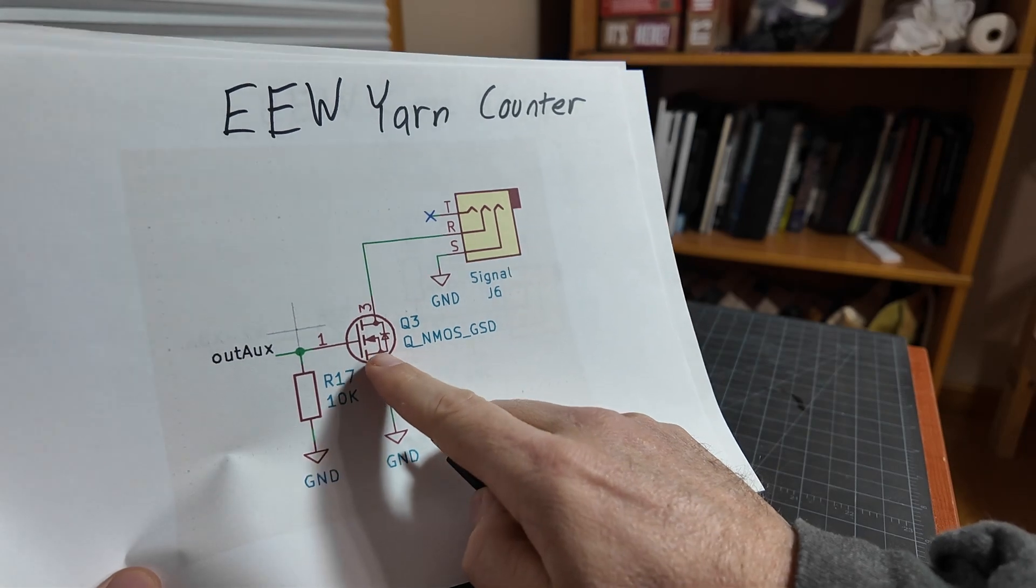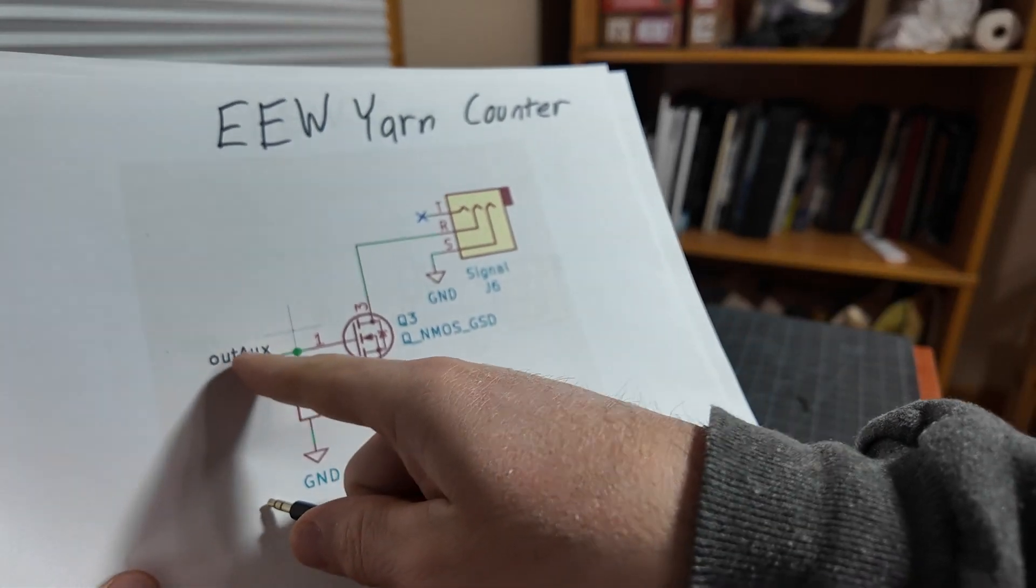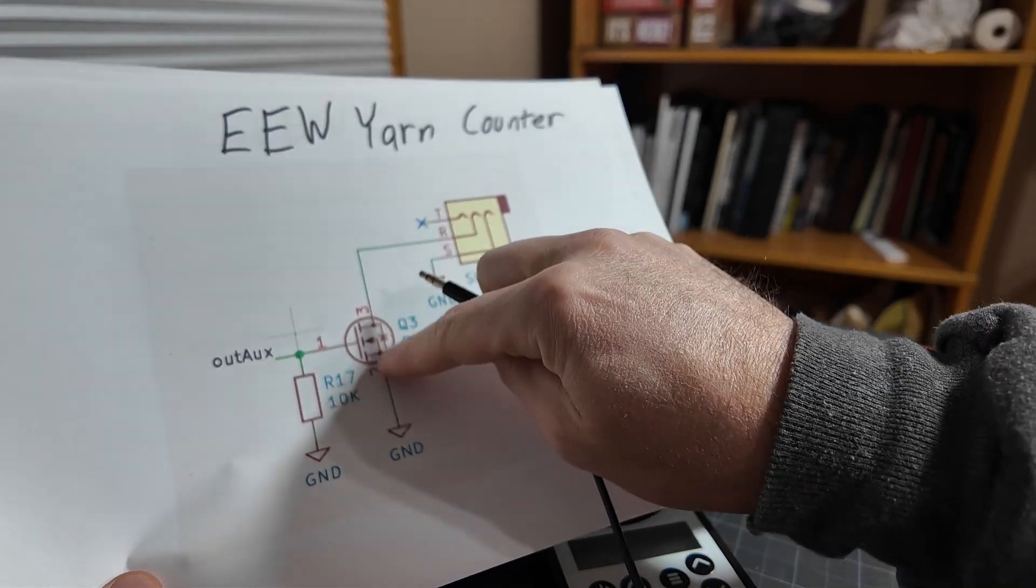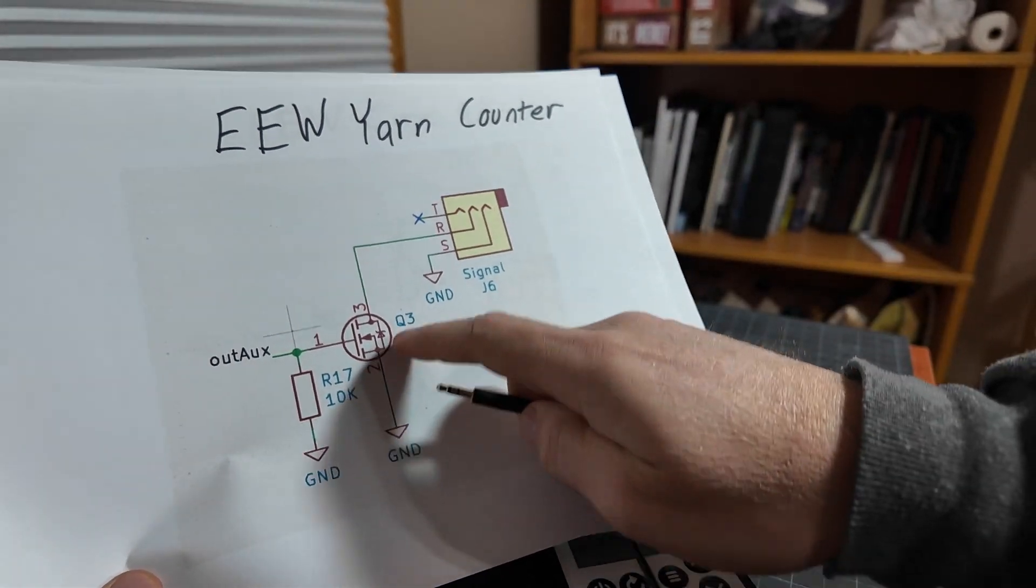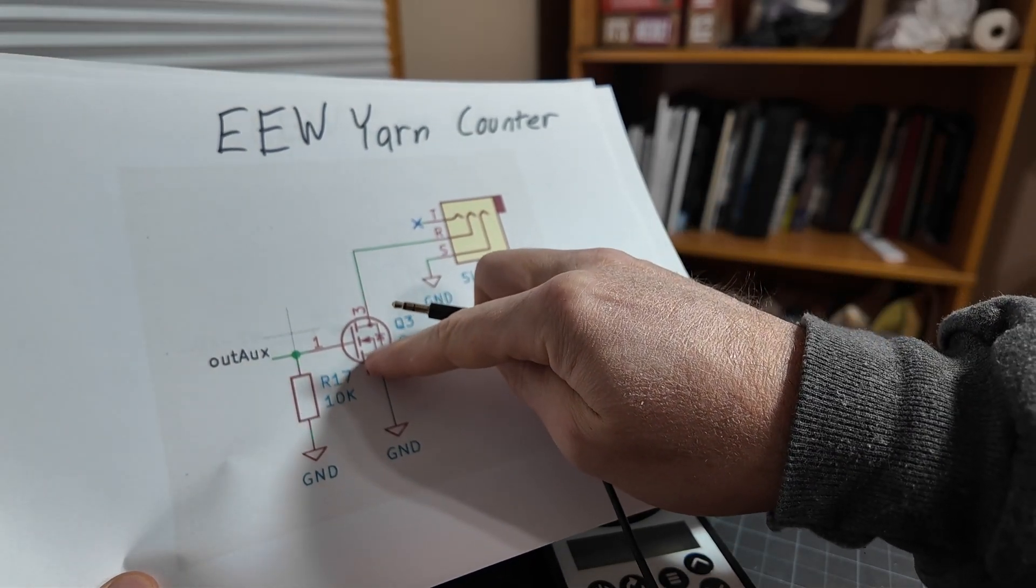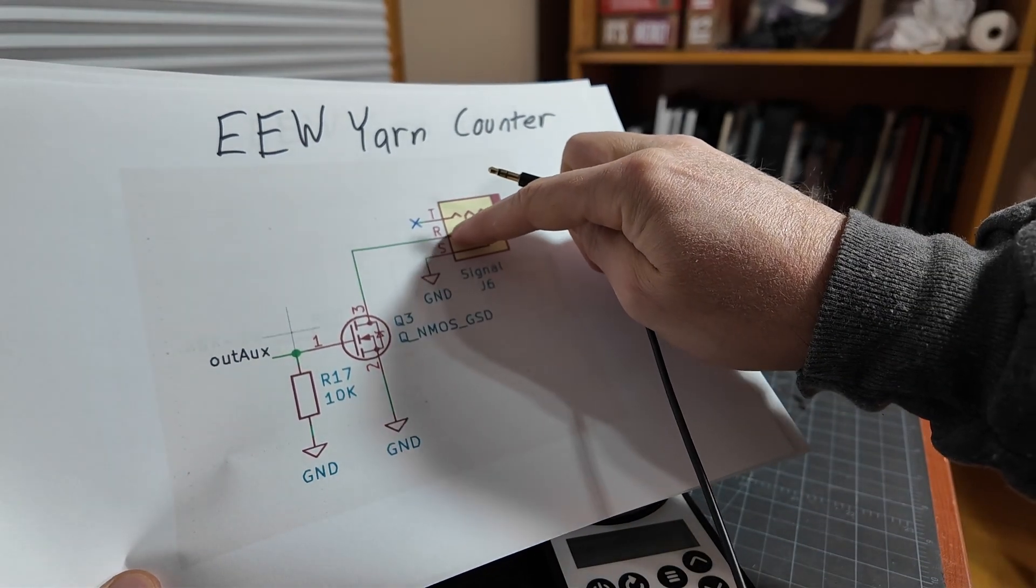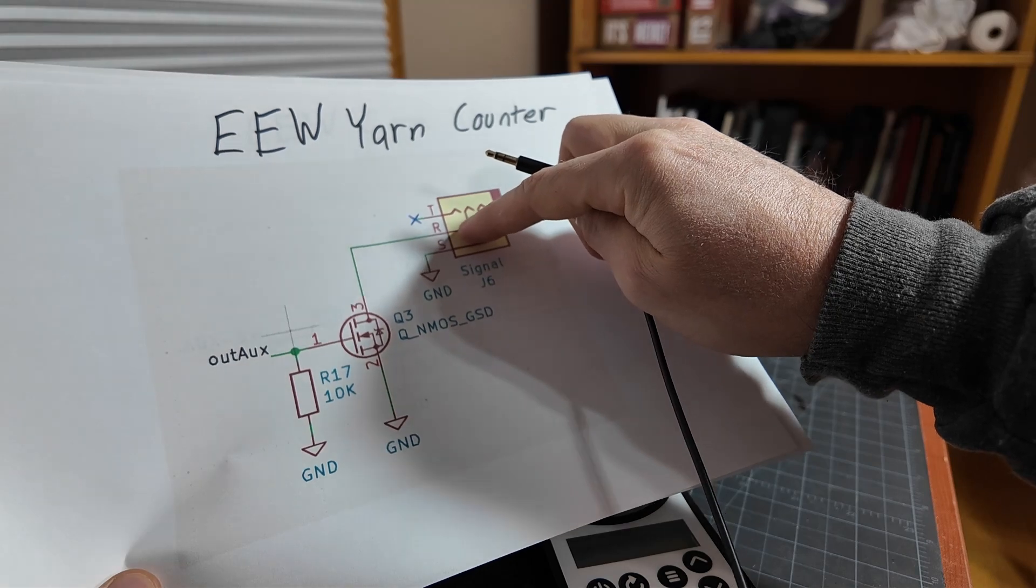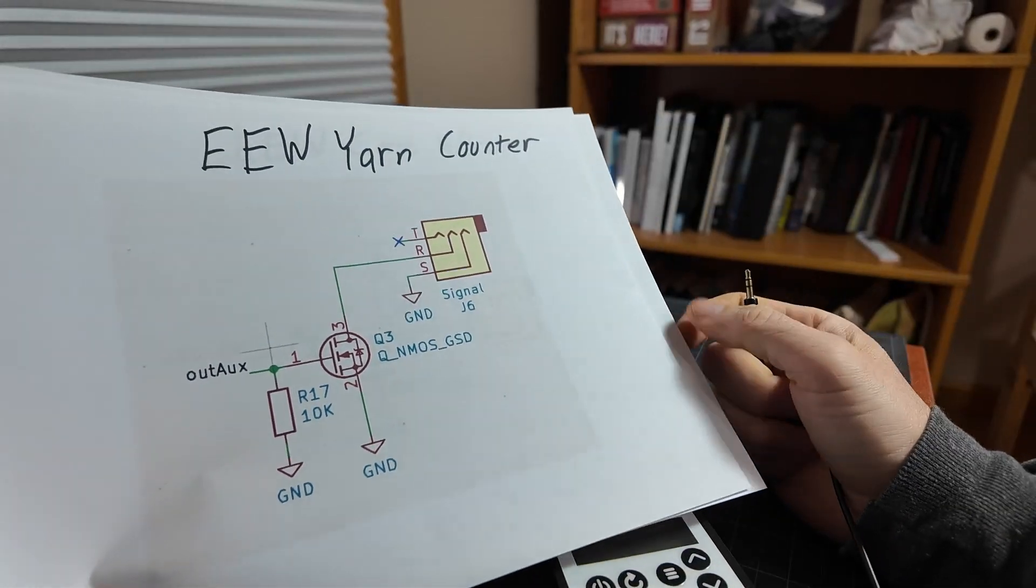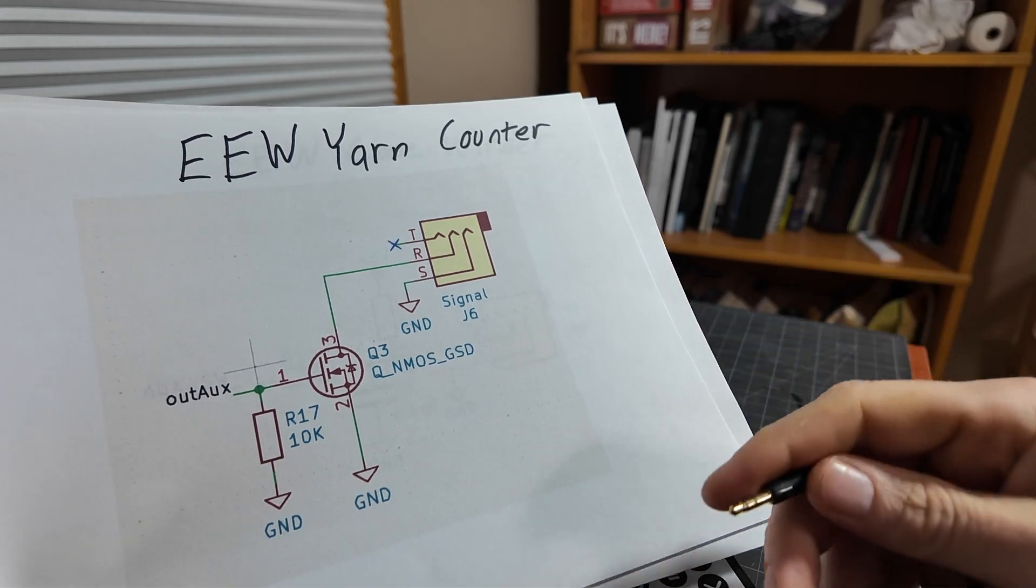And then there's this N-channel MOSFET here, which actually is just acting as a switch. So that's connected to a pin inside the yarn counter, and the yarn counter is going to basically have this switch closed. So most of the time it's closed, and then when we reach that specified length, this switch is going to open, which is going to drop this from whatever voltage your device has set down to ground. This is an open collector system, and it's very common. It's used for photography flashes and a ton of other systems out there.